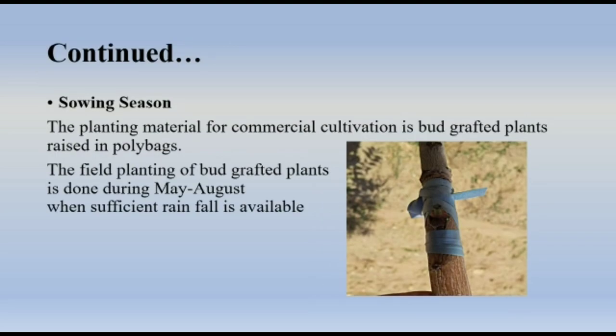Sowing season: The planting material for commercial cultivation is bud-grafted plants raised in poly bags. Field planting of bud-grafted plants is done during May to August when sufficient rainfall is available.